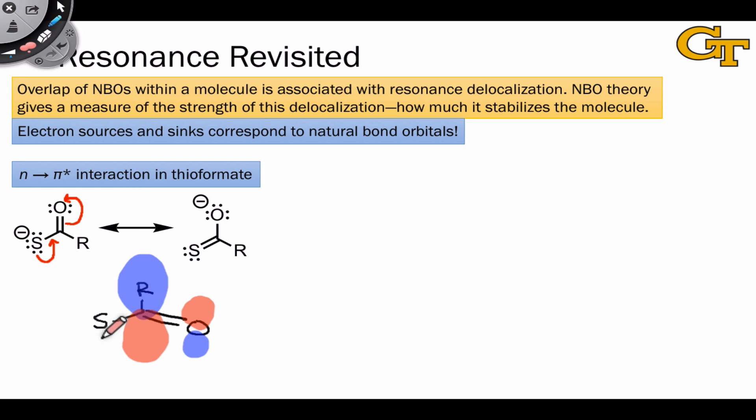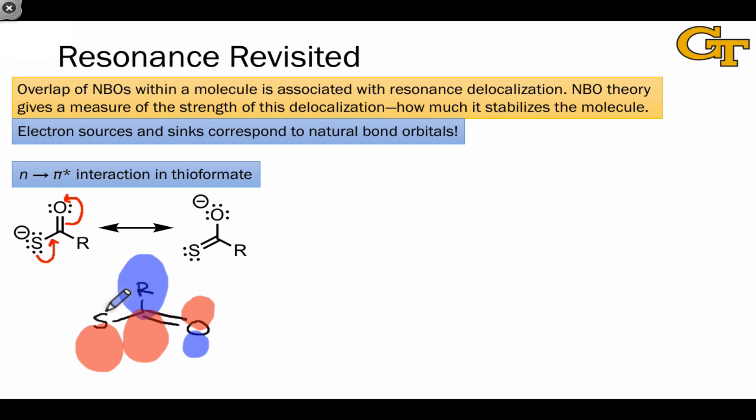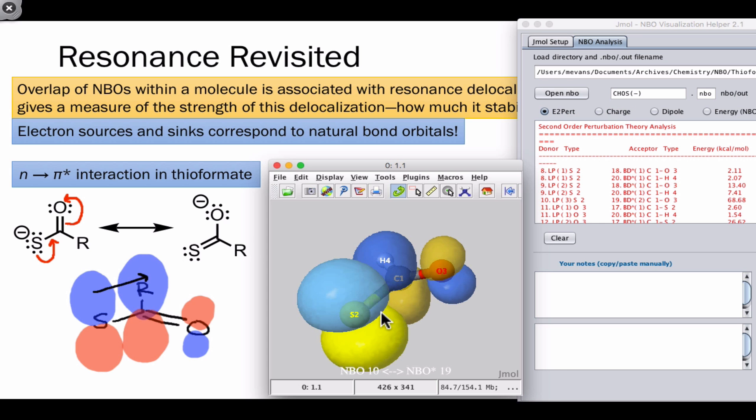Although we might expect the non-bonding lone pair orbital on the sulfur to be a hybrid, recall that for optimal orbital overlap, this should be a p orbital. So we can represent the non-bonding lone pair as a p orbital on sulfur, showing the interaction as an arrow from the donor orbital to the acceptor orbital. Here's a picture of the orbital interaction as calculated by the NBO program, and you can see that it mirrors our prediction exactly. The only difference is that the lone pair orbital on sulfur is slightly bigger than the pi star orbital between carbon and oxygen, which we would expect for a third row versus a second row element.